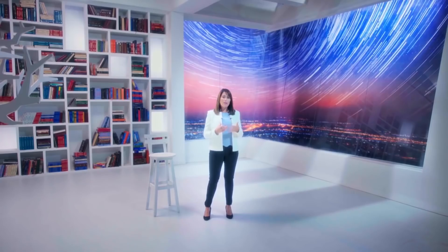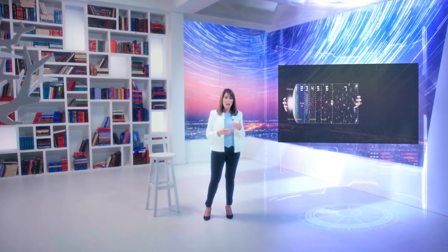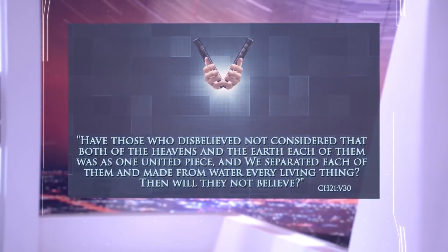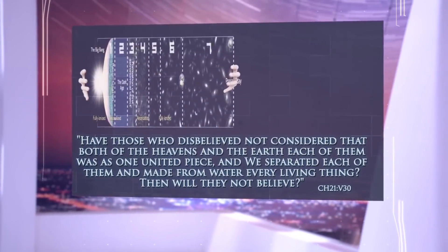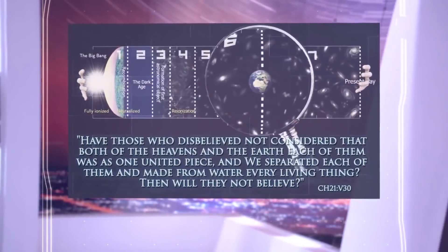This uniformity among the universe's distant regions led physicists to an important conclusion in the Big Bang theory: that these distant regions of the universe we see now must have been in contact with each other in the past, prior to cosmic inflation. This is again consistent with what the Holy Quran revealed 1400 years ago when it stated: 'Have those who disbelieve not considered that both of the heavens and the earth, each of them, was as one united piece and we separated each of them and made from water every living thing. Then will they not believe?' The Holy Quran is telling us that the heavens, or the space eras as we now call them, were one united piece and then God separated them — just as science now asserts that the distant eras of the universe must have been in contact with each other prior to the Big Bang and then, thanks to cosmic inflation, became widely separated eras.